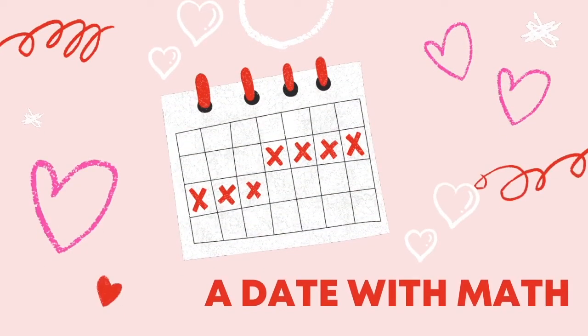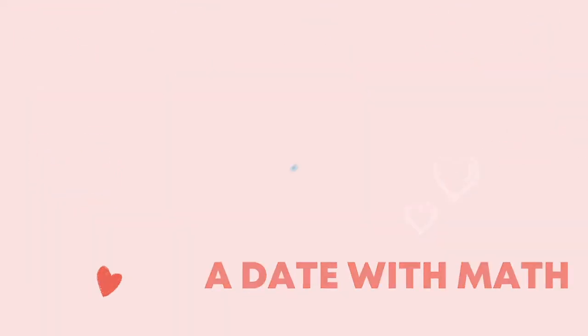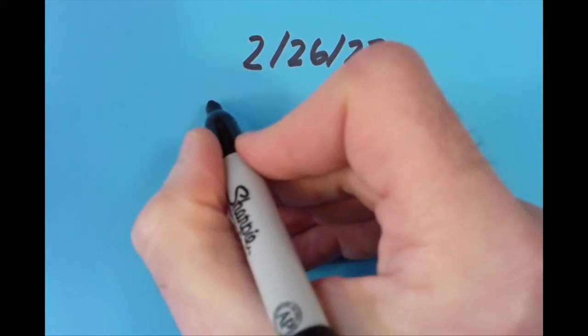A day with math. Hello, today is February 26, 2022, or 2/26/22. What I'd like to do today is make an equation by keeping the digits of today's date in order.